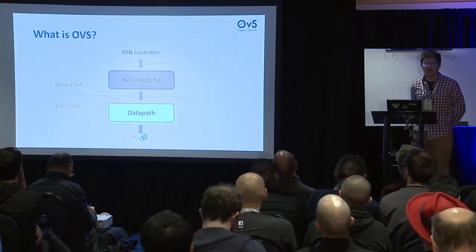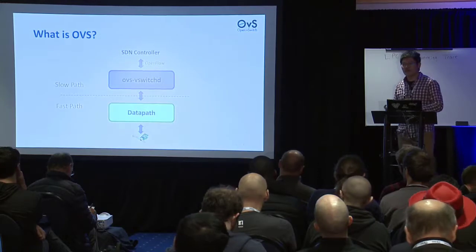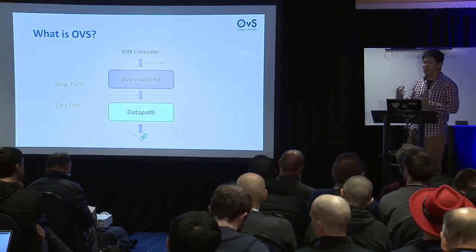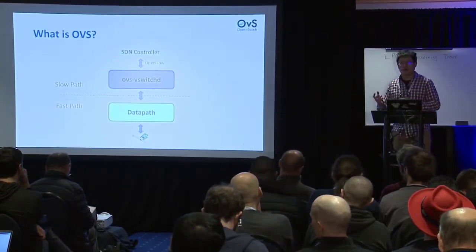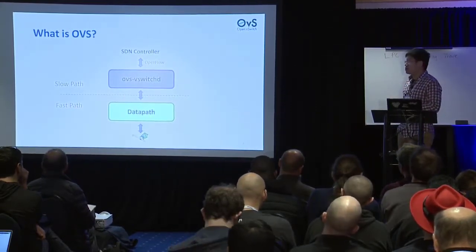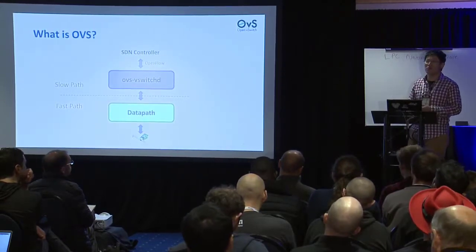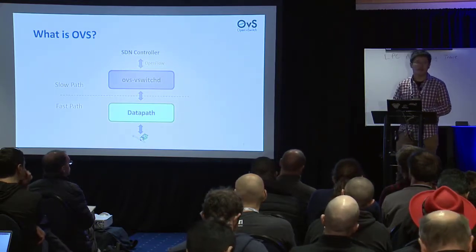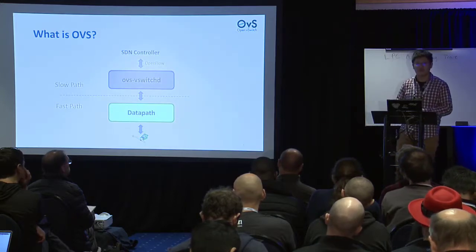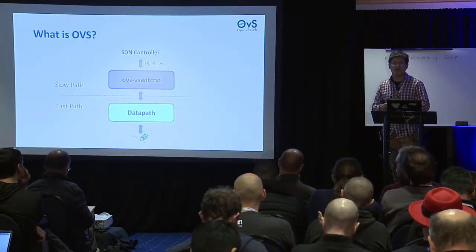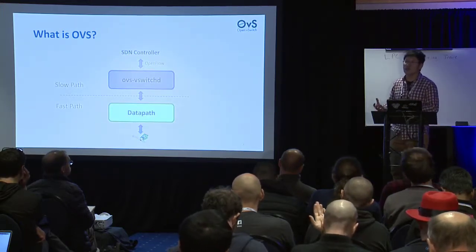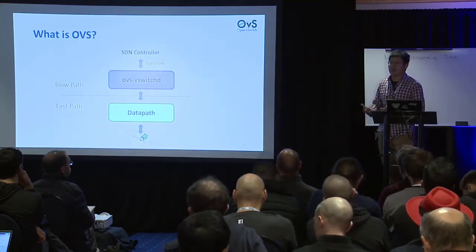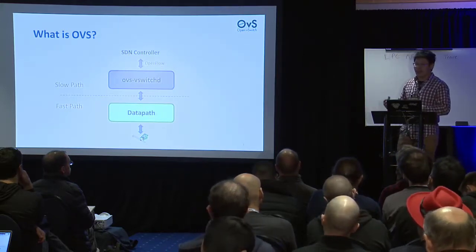At a high level, OVS is a software switch implementation running on the hypervisor. It allows users to create multiple ports that connect multiple virtual machines. OVS is a programmable switch — it doesn't know how to process packets until an SDN controller programs network policy or flows via OpenFlow protocol. For example, you can install a rule to forward from one port to another, or drop packets matching specific headers.